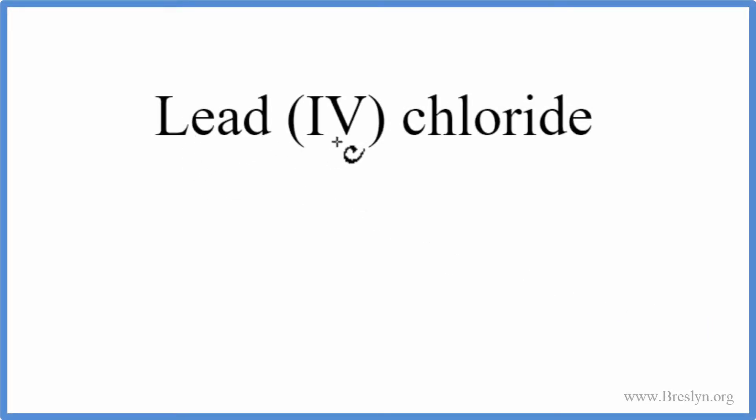To write the formula for lead (IV) chloride, we go to the periodic table and we can see lead, that's Pb. Chloride, we're looking for chlorine, that's Cl.